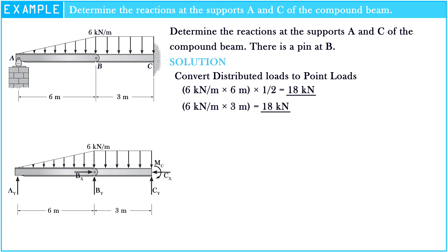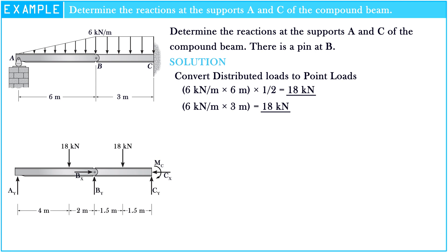From the effective force and load centroid of the triangular distribution loads, the point load is located away from the peak of the triangular distribution load toward the lower end at 1/3 of the distributed length. For the uniformly distributed load, the point load is located at the middle of the distributed length. Here we have the locations of the point loads.